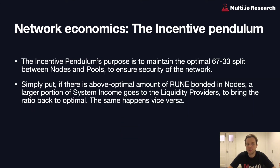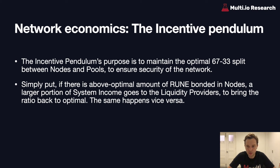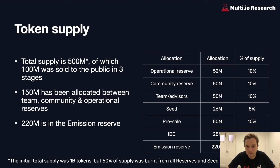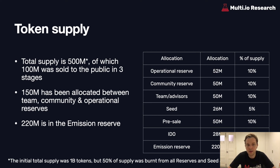The incentive pendulum aims to maintain or reach the optimal 67/33 split. For example, if there is an above-optimal amount of RUNE bonded in the nodes, then a larger portion of system income goes to liquidity providers to bring the ratio back to optimal, and the same happens vice versa. The total supply of RUNE is 500 million tokens, of which 100 million was sold to the public in three stages, and 150 million has been allocated between reserves for the team, community, and operations. Another 220 million is in the emission reserve for block rewards.